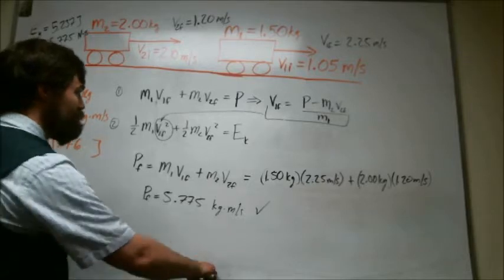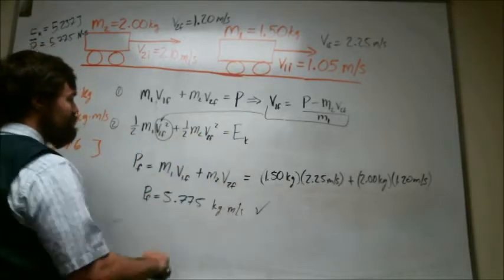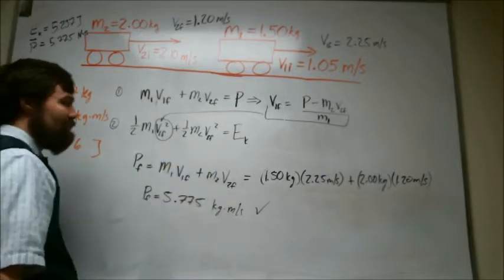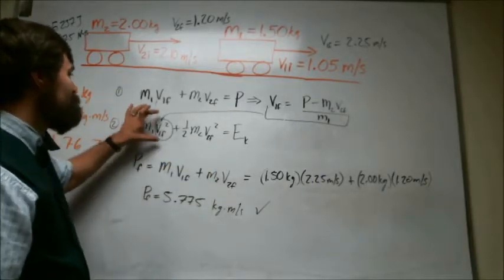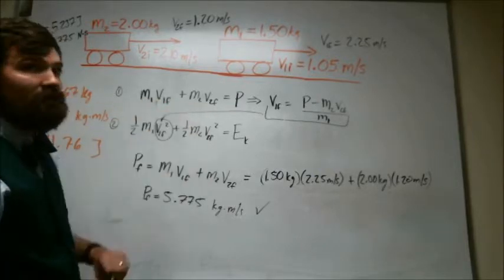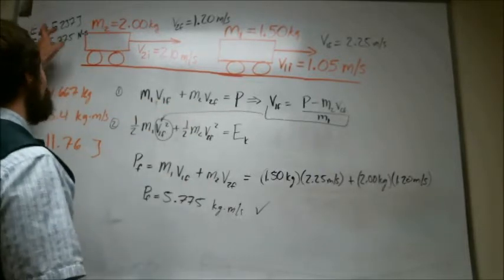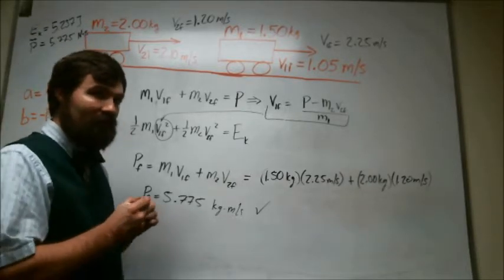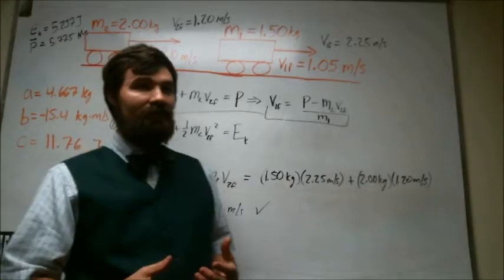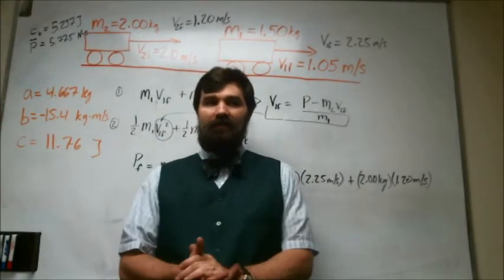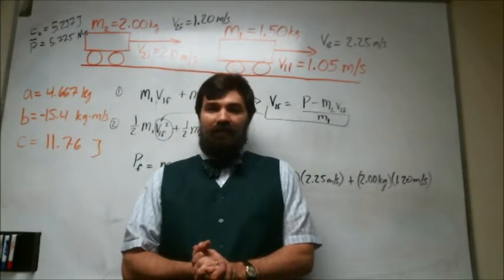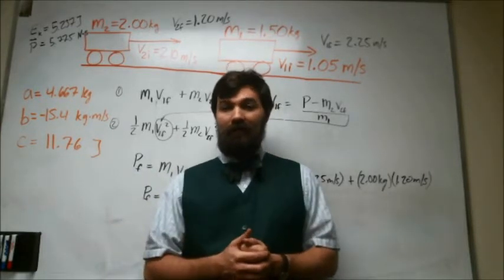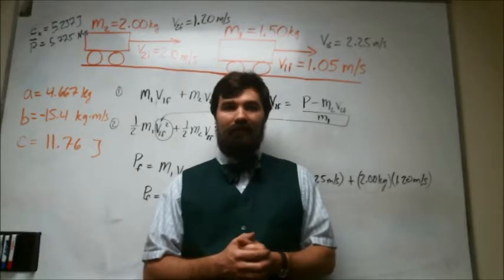So plugging all of that into a calculator should yield that the final momentum is 5.775 kilogram meters per second. And so this final one was in fact equal to the initial one that we calculated at the beginning. So that's good. So yes, that's check number one. Check number two is to calculate the number that we get right here for the final kinetic energy. And in fact, if you plug in the numbers for these speeds and for these masses, you will get 5.237 joules. And so our double-check works out and that implies that we've done everything correctly in this problem.